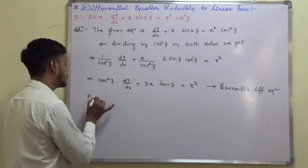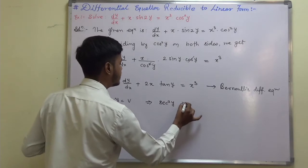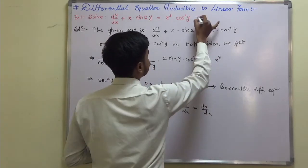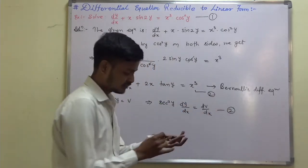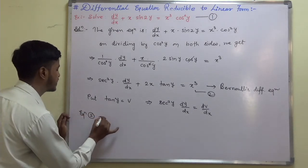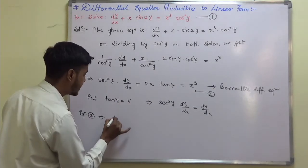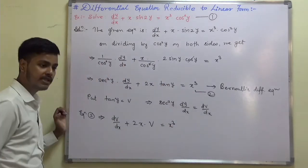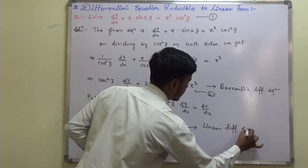To solve, substitute tan y equals v. This implies sec²y·dy/dx equals dv/dx. Substituting into the equation gives: dv/dx plus 2x·v equals x³. This is a linear differential equation.